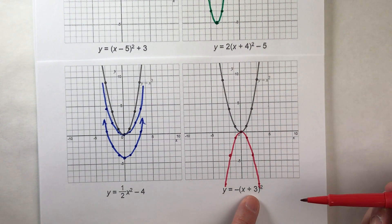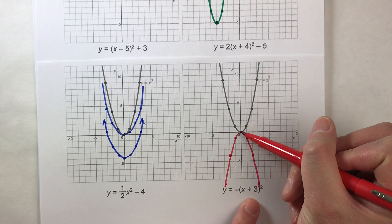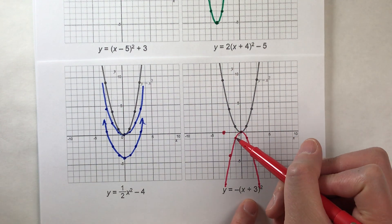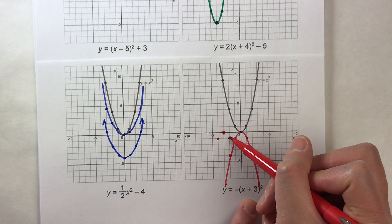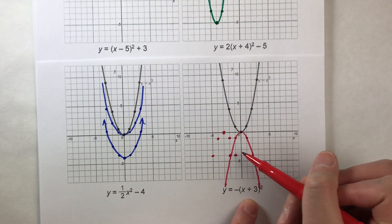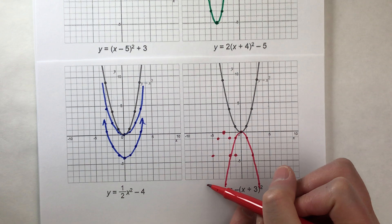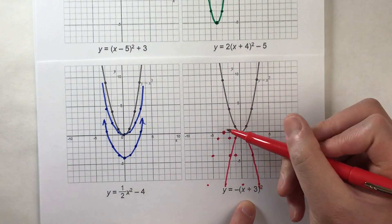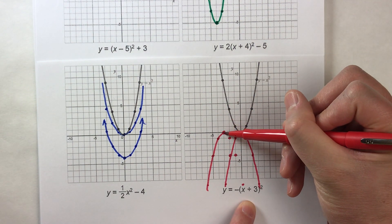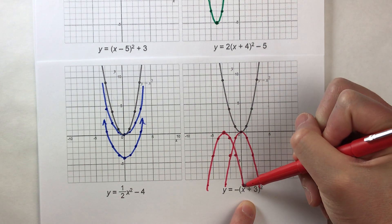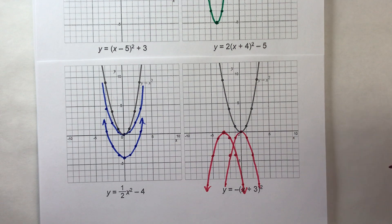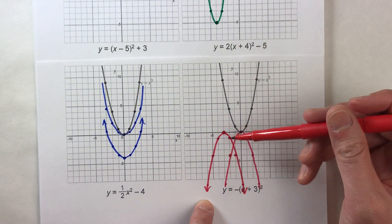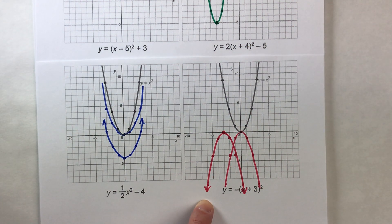Now we just have to shift it to the left three steps. The vertex goes 1, 2, 3 — it's going to be there. And then everything else just shifts over three steps as well. So those points shift three steps, three steps. And now we can see what our new parabola looks like — it's going to be that one right there.